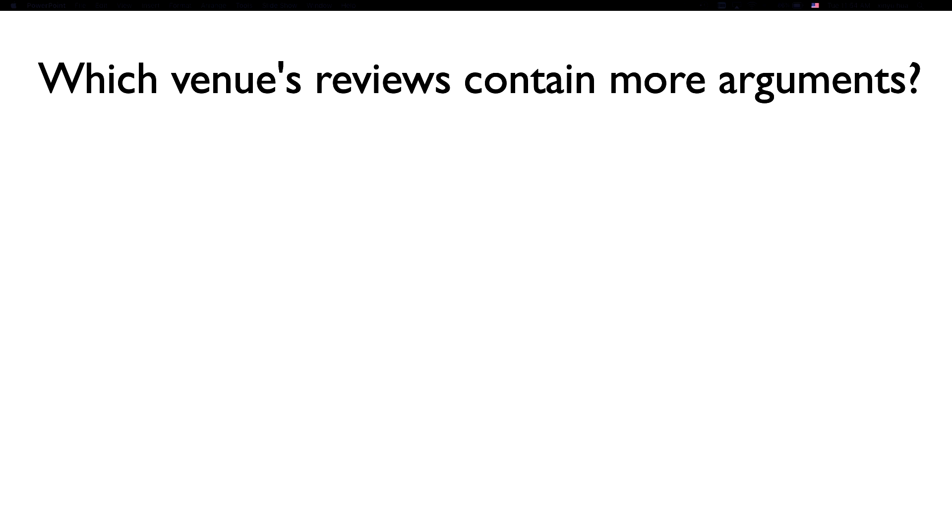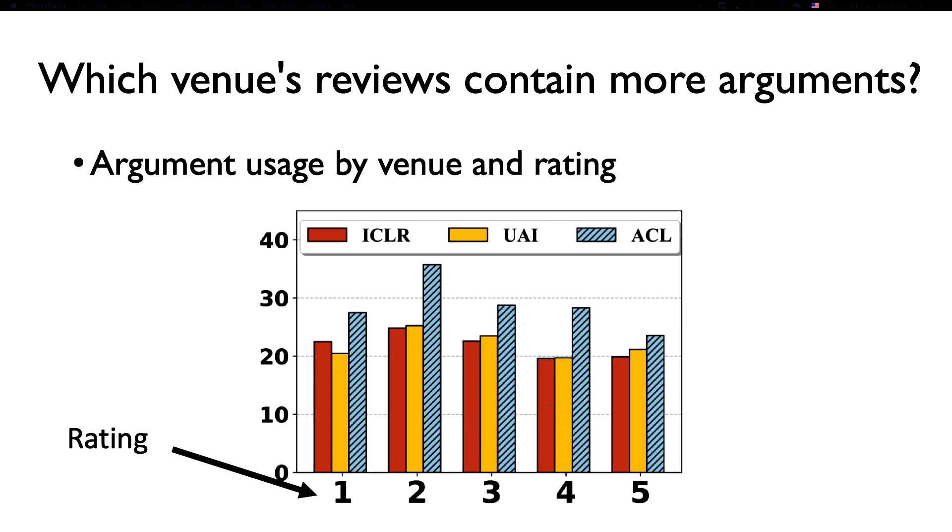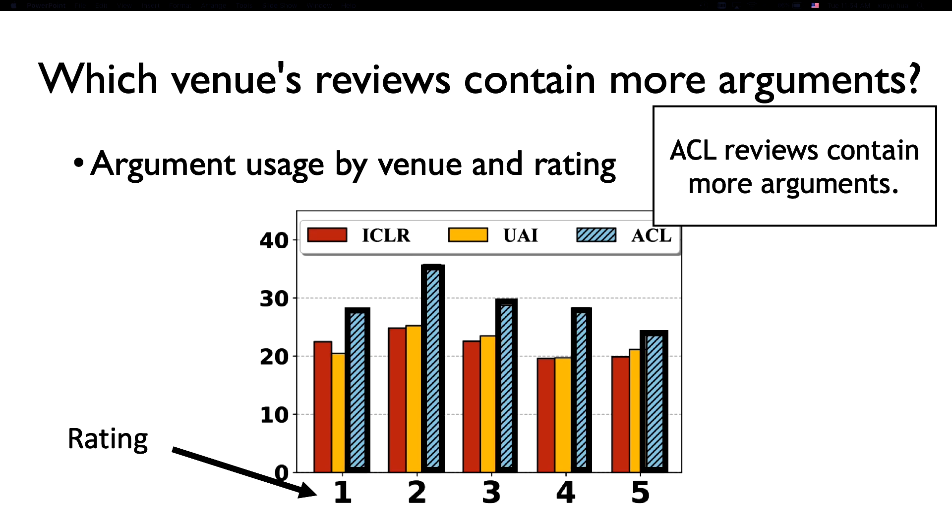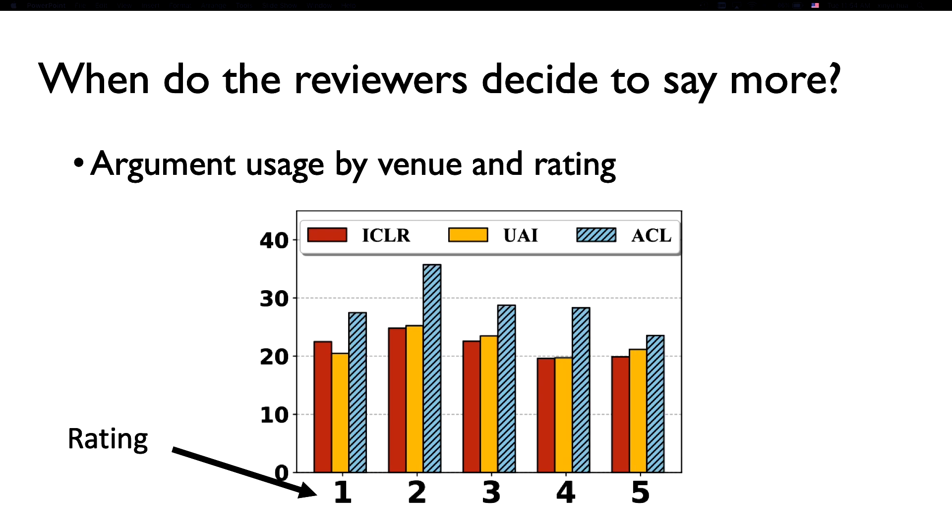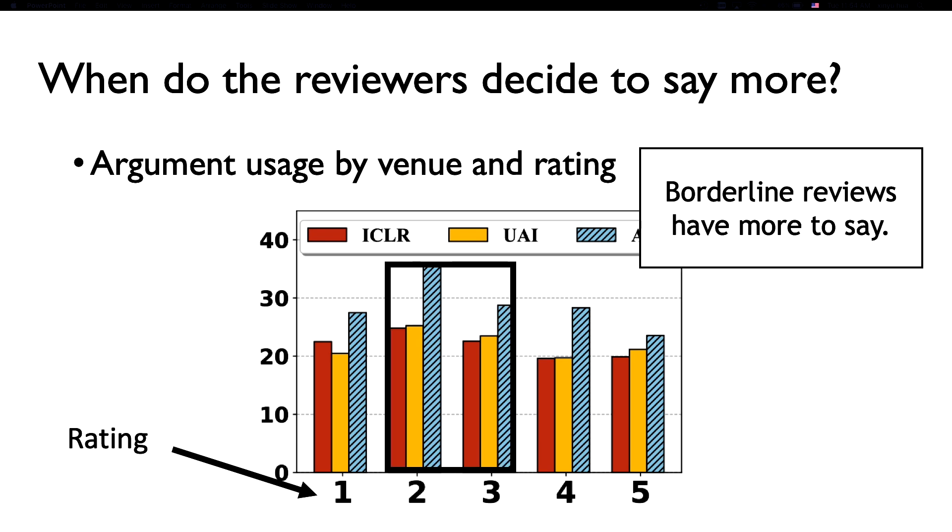The first question here we want to ask is, which venue or conference has more arguments than others, or is there a difference? In this figure, we show average number of arguments per review broken down into the conference venue, such as ICLR, UAI, and ACL, as well as the ratings. We see that ACL reviews definitely have more arguments. In fact, it is actually longer. It contains more words than the machine learning counterparts. On the same figure, we want to ask, when do the reviewers decide to say more? And non-surprisingly, for the borderline reviews, usually it has more arguments.